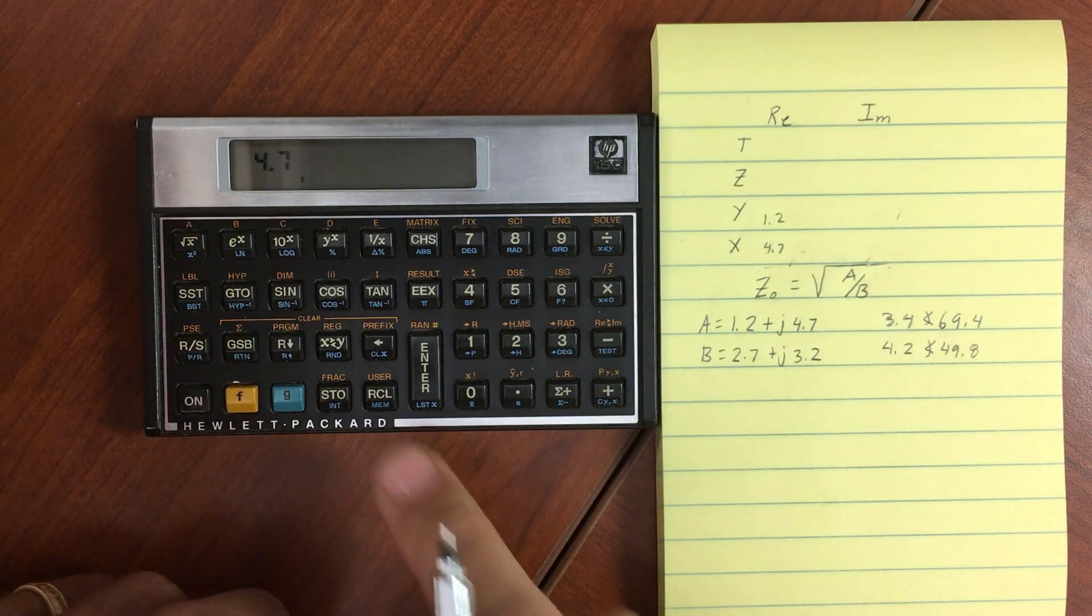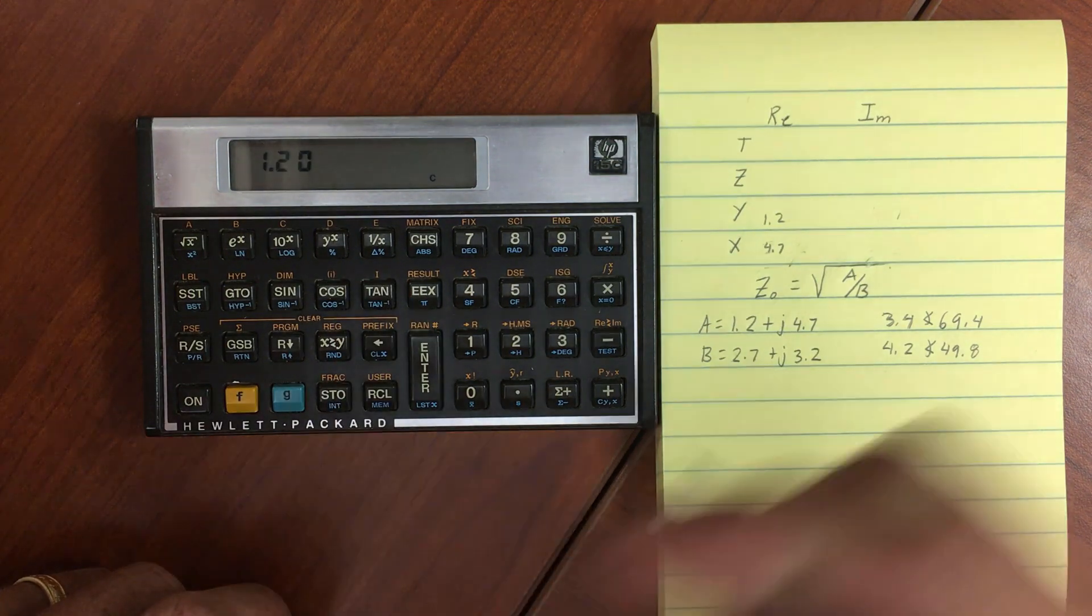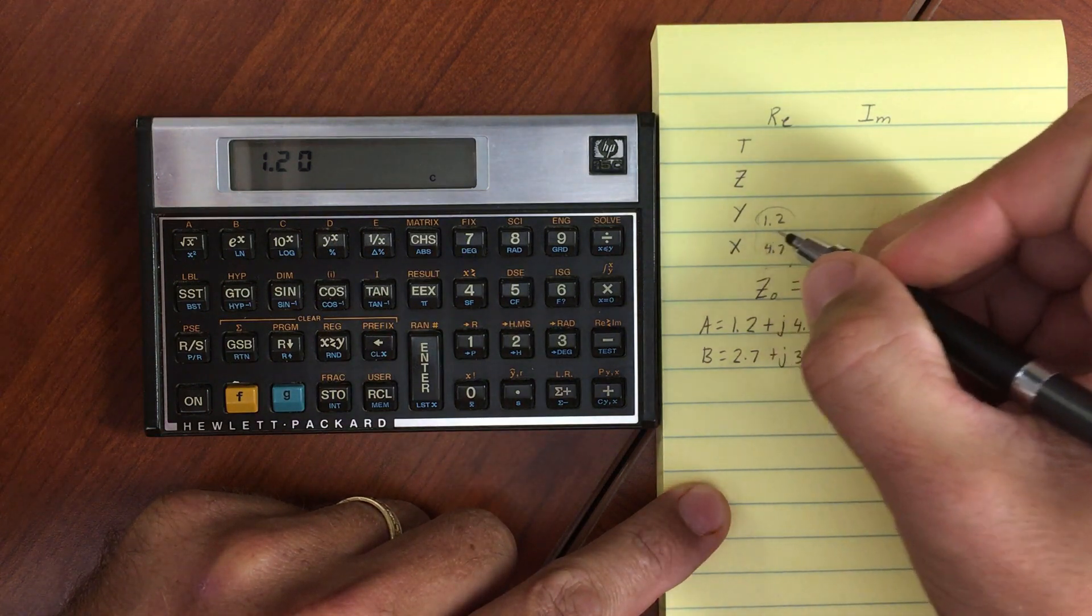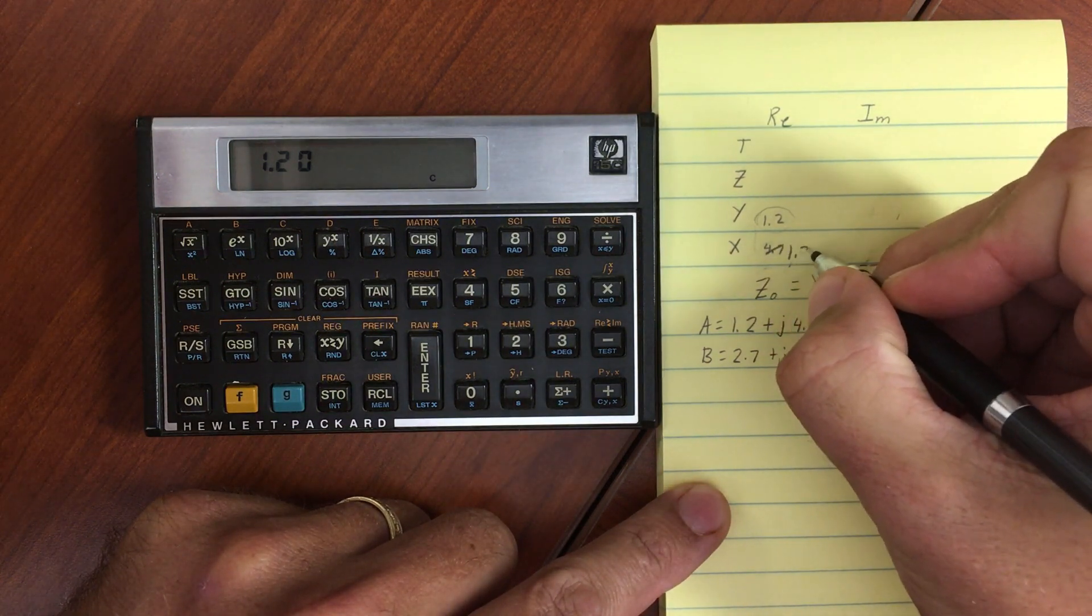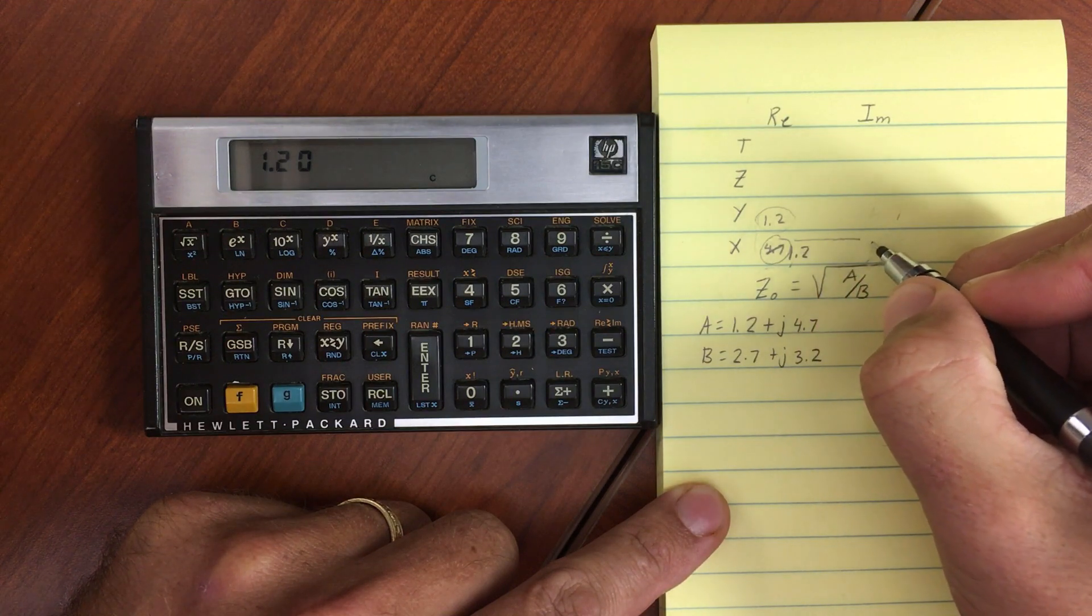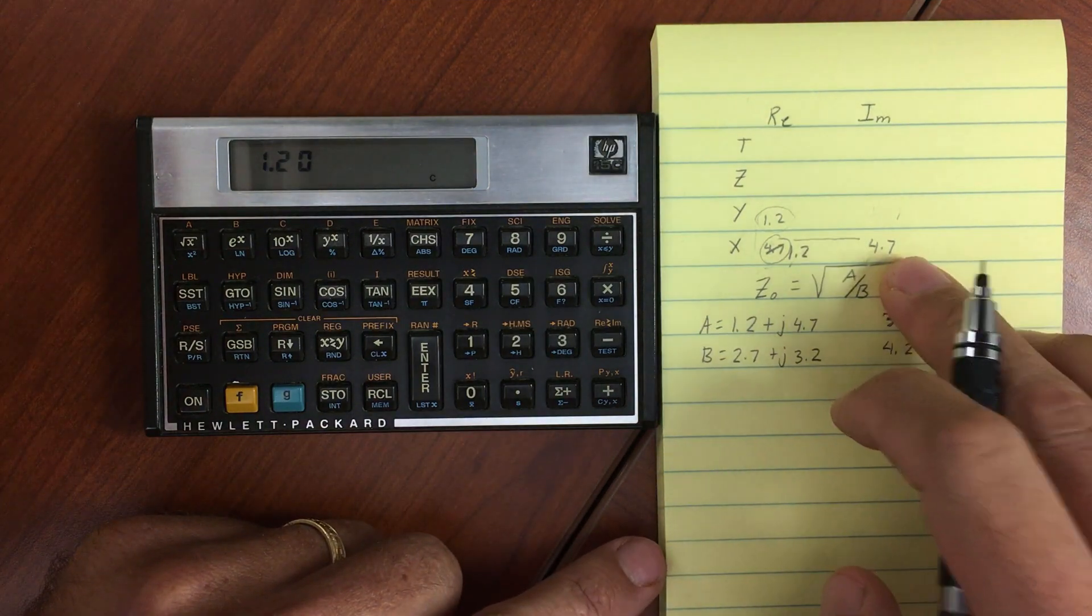Now if I hit Gold Shift and then I, that changes it to a complex number, and it drops that real portion down into the X stack, and now I have 1.2, and it shifted this 4.7 over into a newly created imaginary stack. So I have 4.7 over in the X register over there.